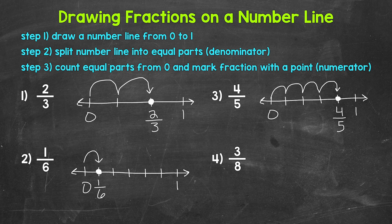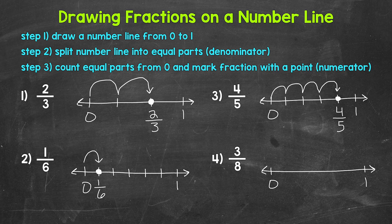Lastly, let's move on to number four. We have three-eighths. Let's start with our number line from zero to one. Now for eighths, we're going to do something a little different to help us stay as equally spaced as possible — you don't have to do it this way, but it's something to keep in mind. First, we're going to split the number line in half. Now we're going to divide each of those parts in half, and in half again — now we have four total equal parts. Lastly, we're going to divide each of those parts in half again: in half, in half, in half, and in half. And now we have eighths — eight total equal parts. We went from two equal parts to four equal parts to eight equal parts.